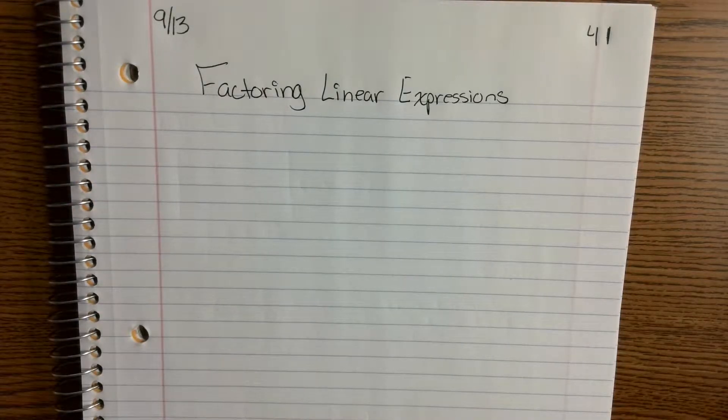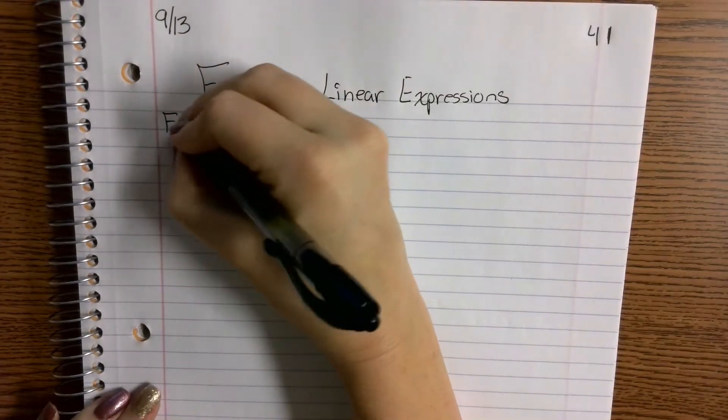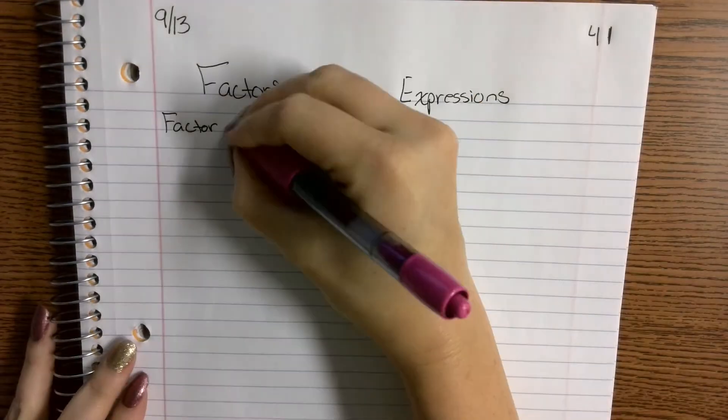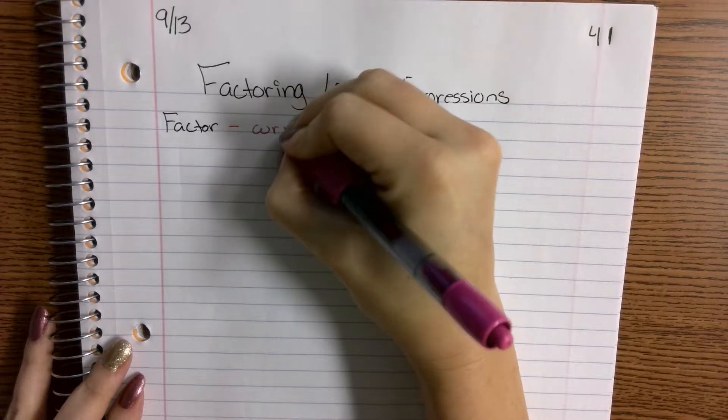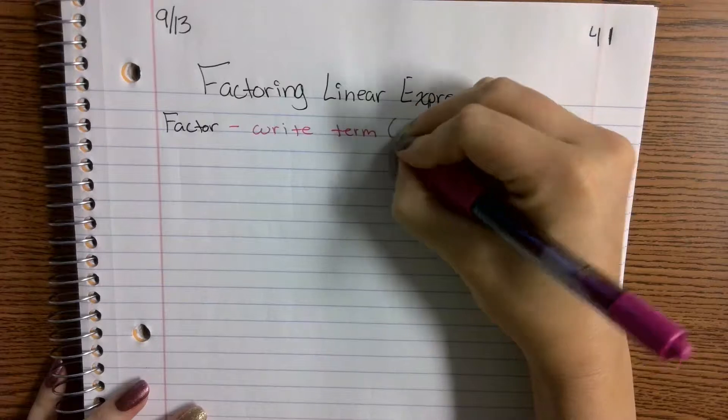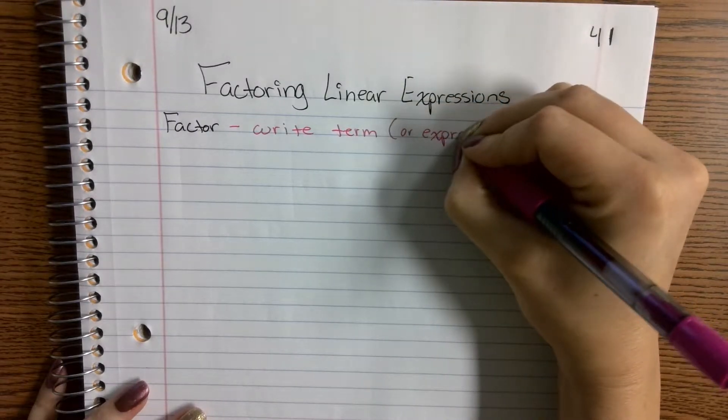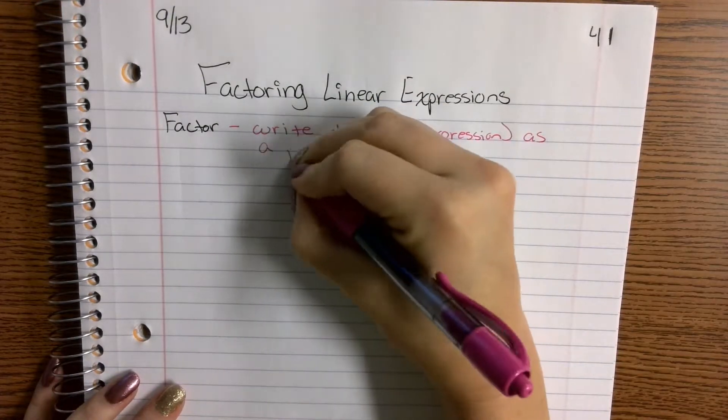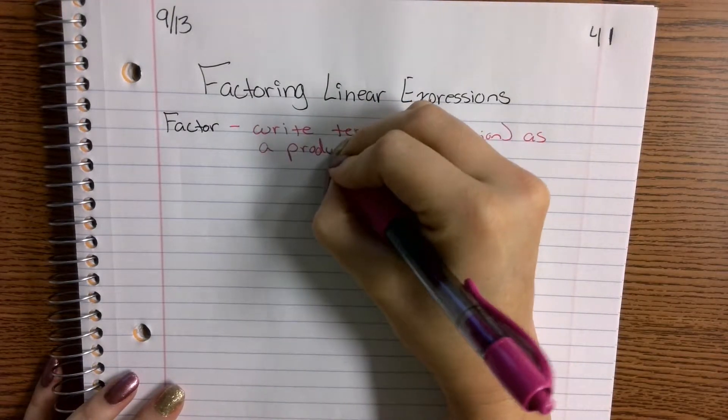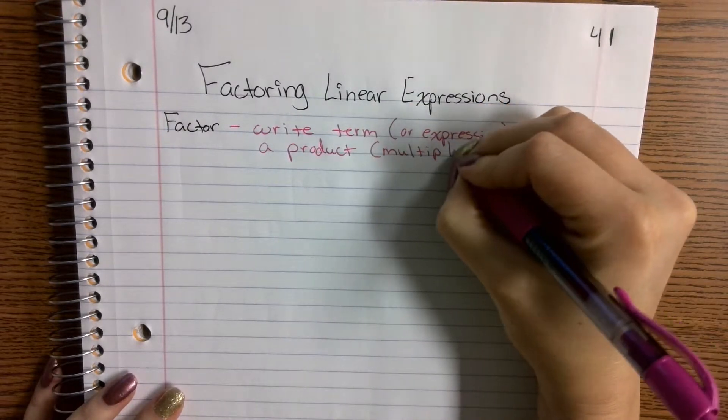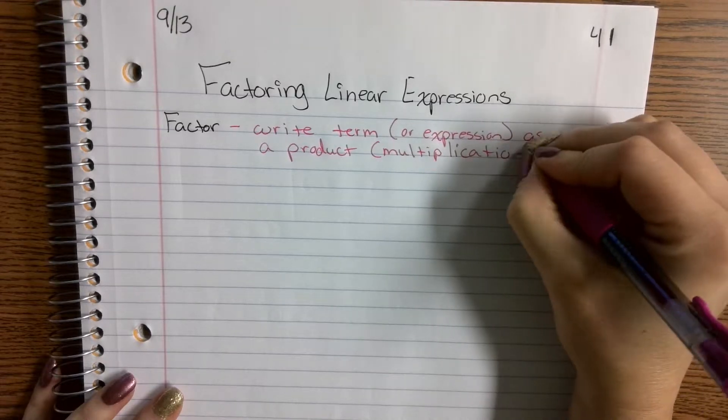We're going to be doing factoring, factoring with linear expressions. Factoring, if we talk about a factor, the idea of a factor, it's basically if you were to write a multiplication problem, you're going to write the term or expression as a product. And by the word product, we mean multiplying, right? Multiplication. So you're having to identify factors of multiplication.